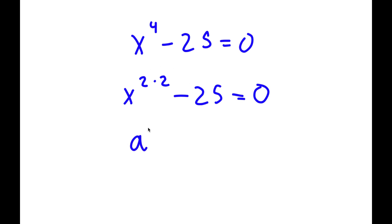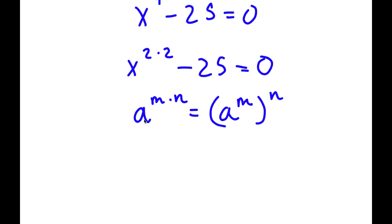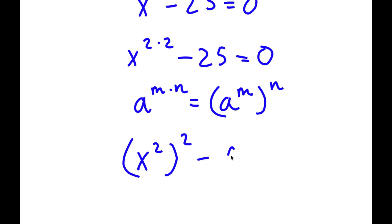Now, if I have something in the form a to the power of m times n, this is equal to a to the power of m to the power of n. So x to the power of 2 times 2, I can write as x squared to the power of 2, minus 25, which I can write as 5 to the power of 2. So this is equal to 0.